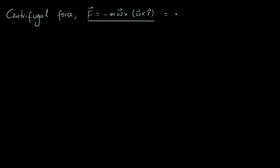It's often written in this form with the minus sign. I'm just going to get rid of the minus sign by changing the order of the cross product. So if we write it as m times omega cross r, and then that vector crossed with omega, that's the same thing but we don't have to think about the minus sign in the front.